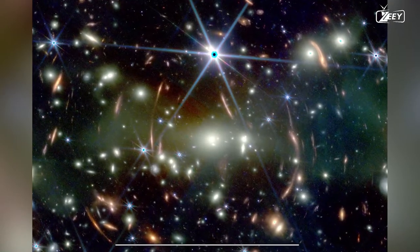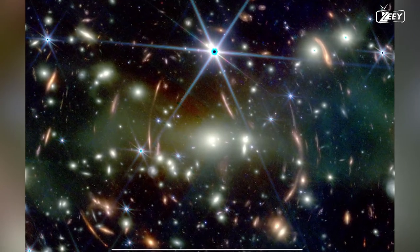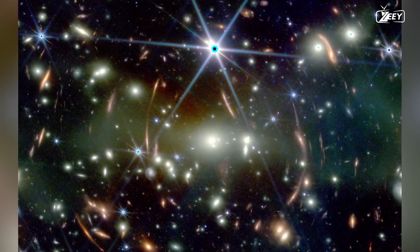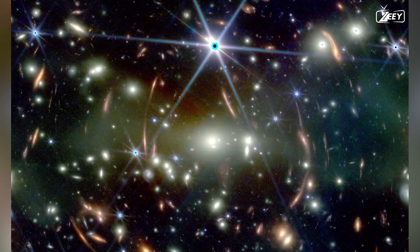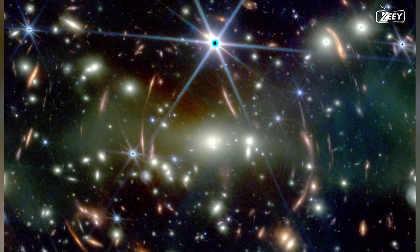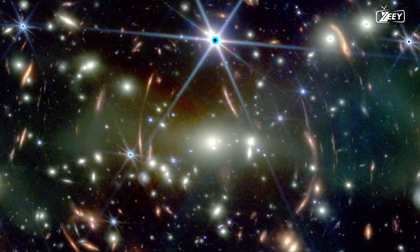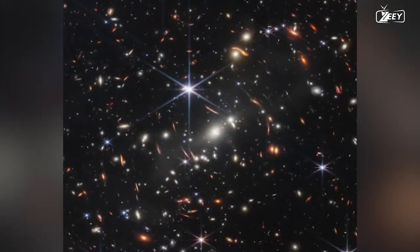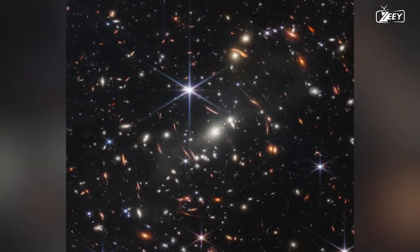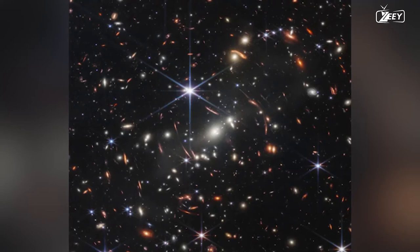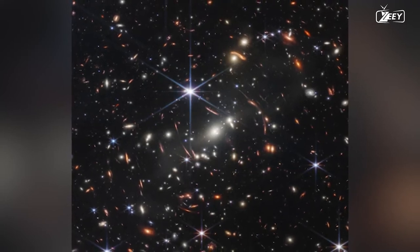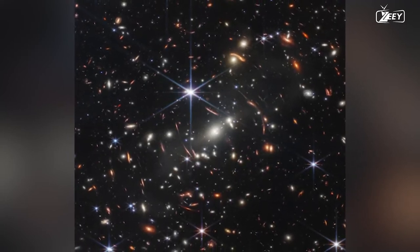In the James Webb Deep Field, in the center-left section, you can see a galaxy warped by a gravitational lens, but around it are 12 unexplained dots. This is the team's discovery. The 12 spots surrounding the galaxy sparkler cannot be seen with the Hubble telescope, but they can be viewed with the James Webb.